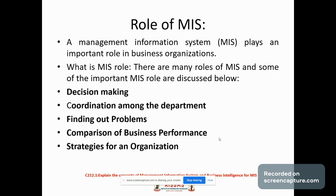The third role is about finding out problems. Management information system provides relevant information about every aspect of activities. Hence, if any mistake is made by the management, then management information system will help in finding out the solution to that particular problem.